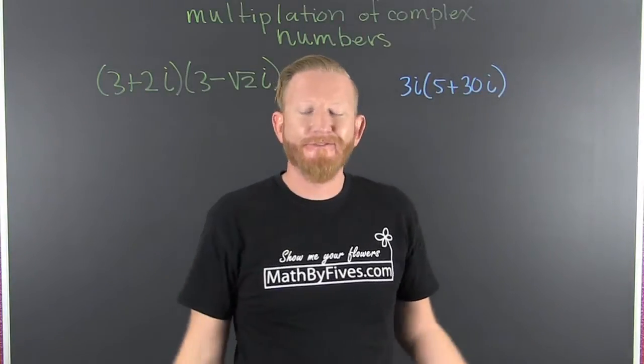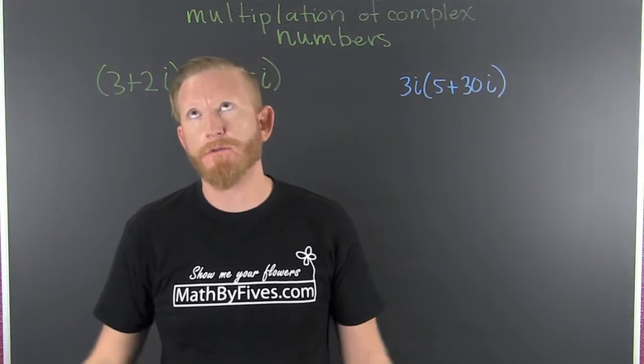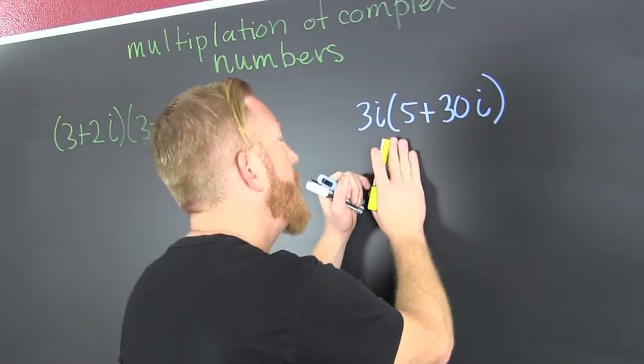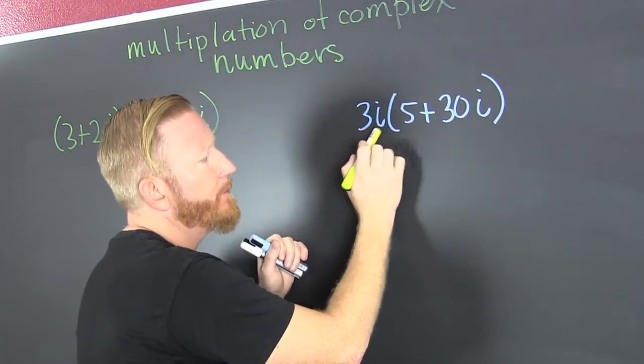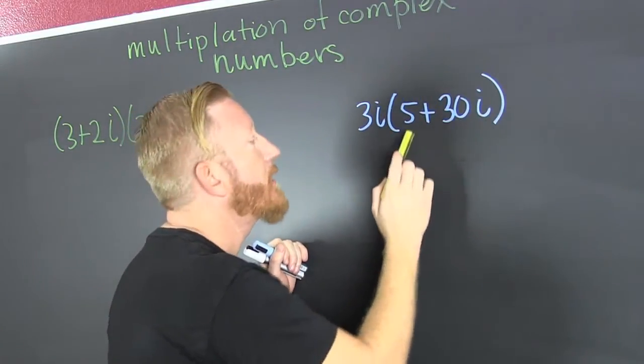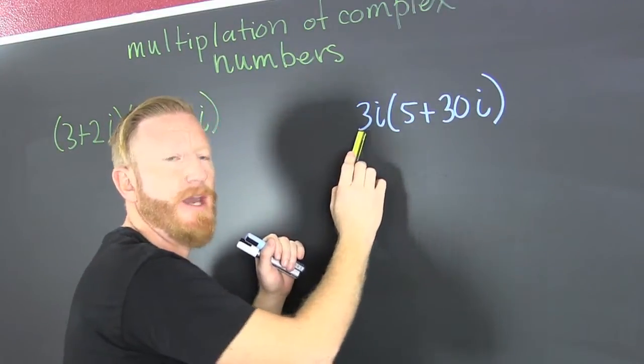Multiplying complex numbers. Let's first start with the purely imaginary times the other complex number. What am I talking about? I'm talking about this one. Yeah, sure. I have that purely imaginary number times that complex number. That complex number has a real part and an imaginary part. This one doesn't have a real part, it's just imaginary.